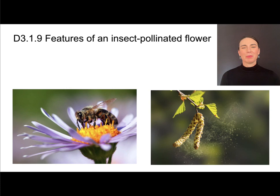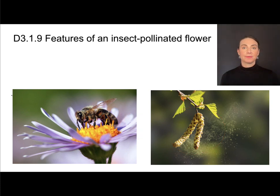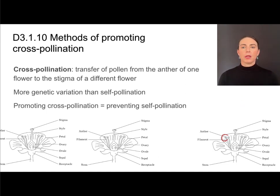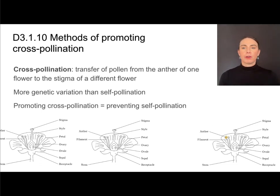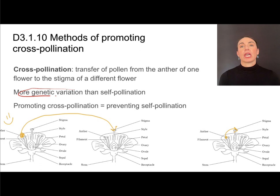It's worth noting that flowers that are not insect pollinated but rather wind pollinated aren't going to have petals because they are not trying to attract pollinators. Now it is possible that flowers can self-pollinate — pollen from the anther can land on the stigma of the same plant — but that's really not desirable. What is better is cross-pollination: the transfer of pollen from the anther of one flower to the stigma of a different flower of the same species but a different individual. This is much better because we're going to have more genetic variation this way.